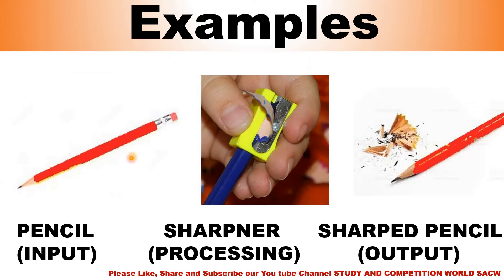This is a pencil — pencil is input. This is a sharpener — sharpener is processing. You sharpen your pencil in the sharpener. After that, what do we get? We get a sharp pencil. That is your output.